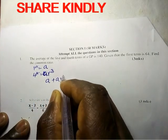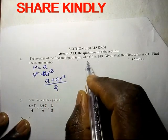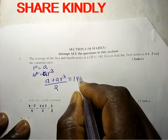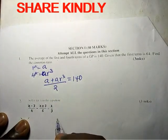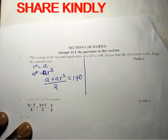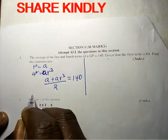The average a plus a r cubed divided by 2, this average will be equal to 140. We have been told that given that the first term is 64, so the first term a is equal to 64.